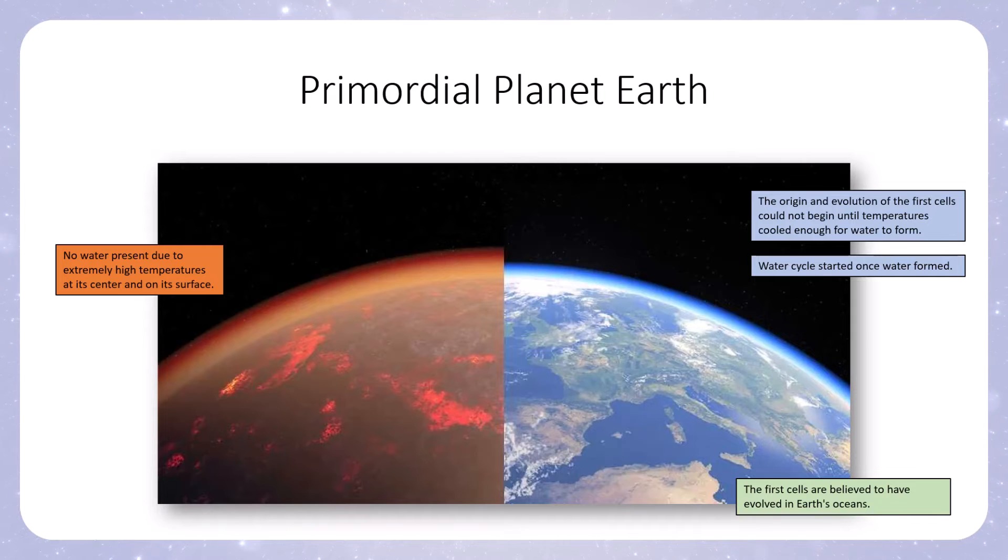Once those prokaryote cells evolved into unicellular eukaryotes, they then began to evolve into multicellular eukaryotes, which eventually became all of the living things that we currently know and take advantage of on planet earth, like fish, birds, amphibians, reptiles, and mammals.